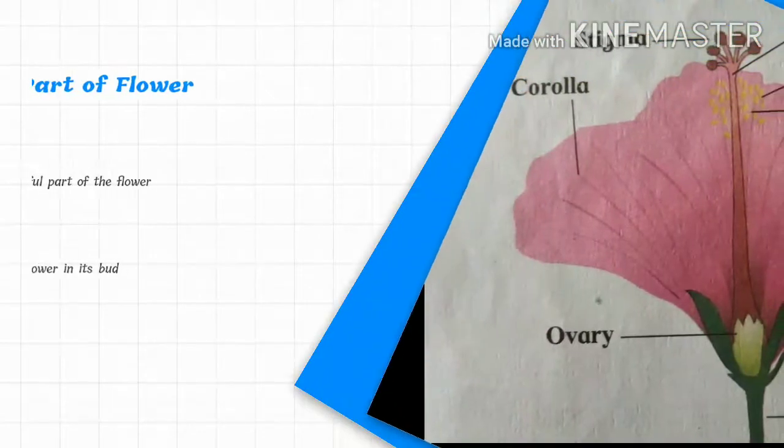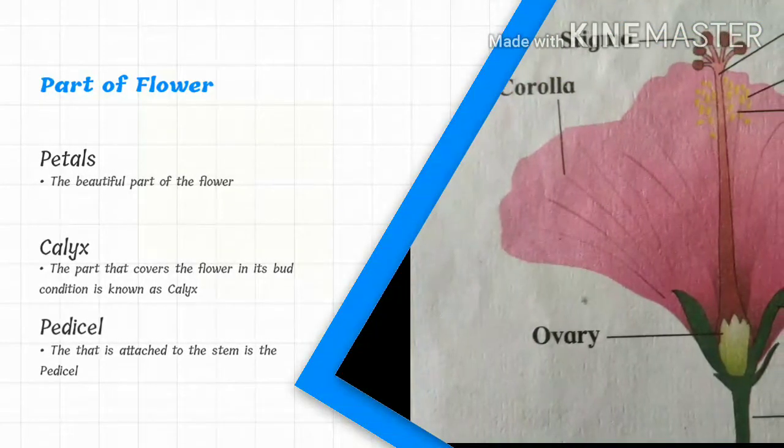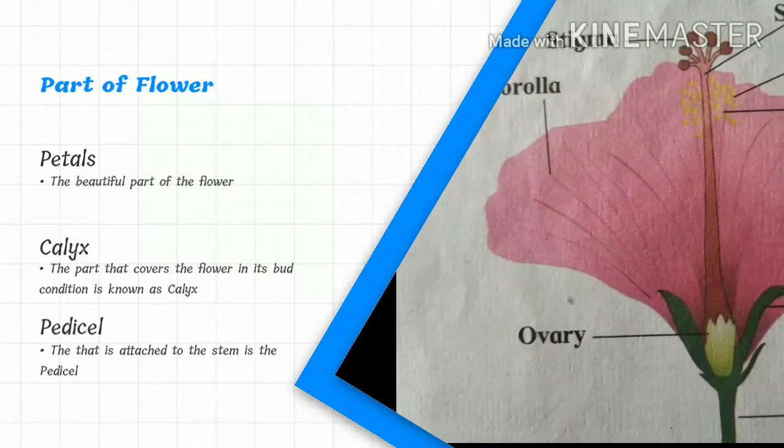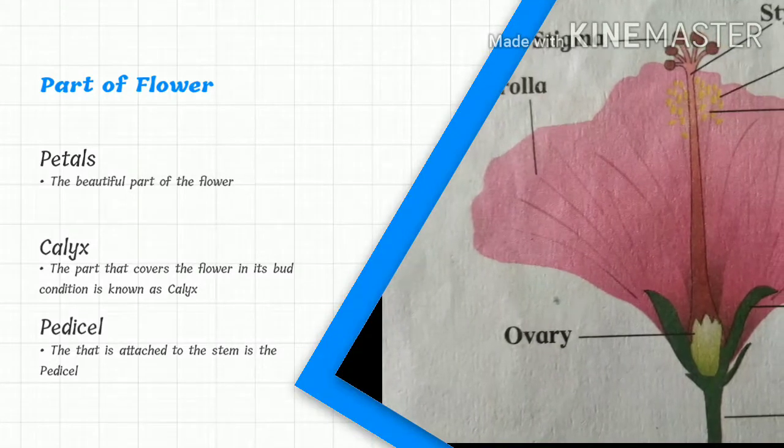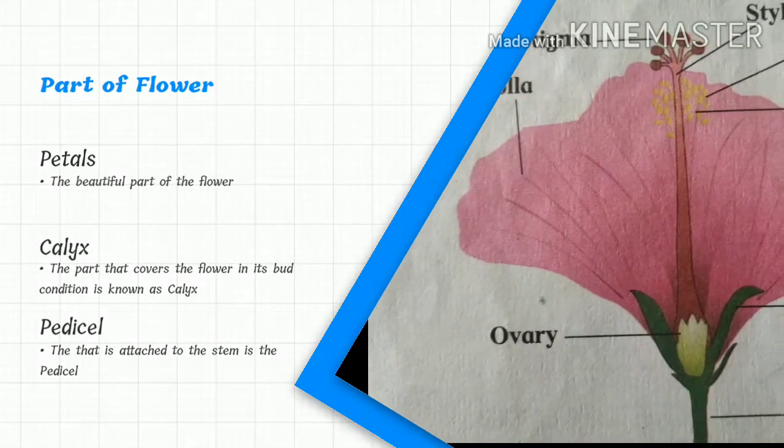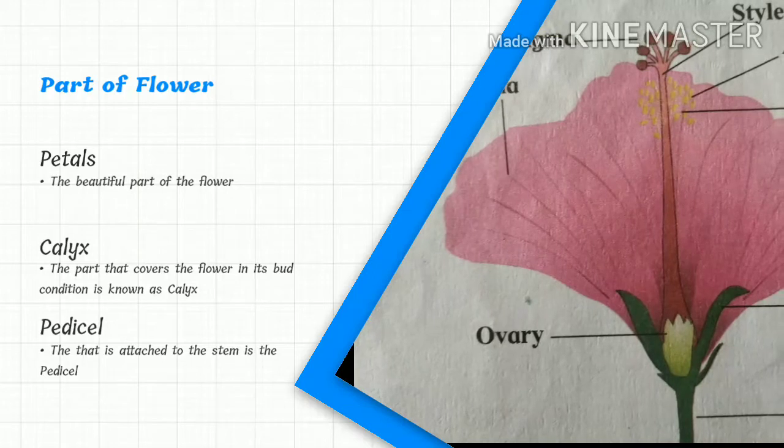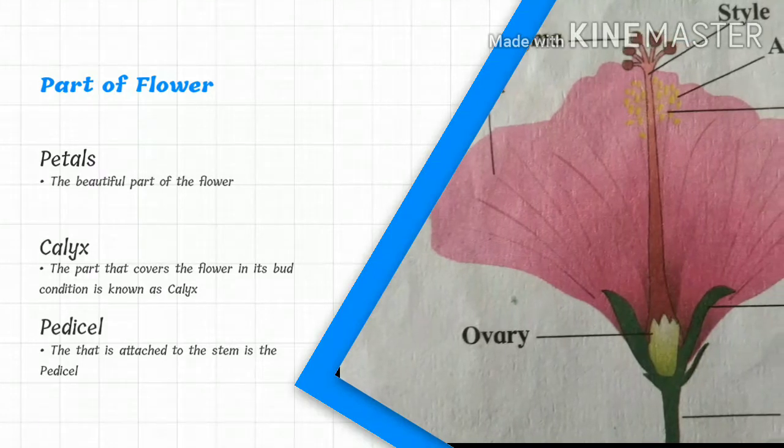The parts of the flower: Petals - the beautiful part of the flower. Calyx - the part that covers the flower in its bud condition. Pedicel - the part that is attached to the stem.